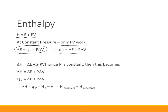For enthalpy, if I measure the change in enthalpy, that's going to equal the change in the internal energy plus the change in the work. Since P is constant, the delta only applies to the change in volume. Therefore, ΔH is equal to ΔE plus PΔV. And we've already seen that Qp is equal to ΔE plus PΔV, which means, since they're equal to the same quantity, they must be equal. ΔH is equal to Q at constant pressure.